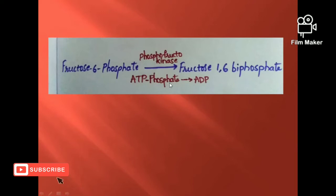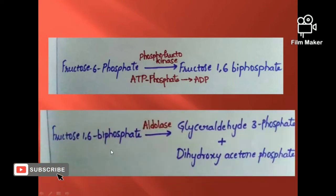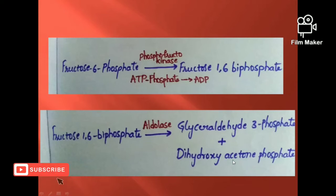In the fourth step, fructose-1,6-bisphosphate is broken down into glyceraldehyde-3-phosphate plus dihydroxyacetone phosphate. Fructose-1,6-bisphosphate is a 6-carbon molecule.